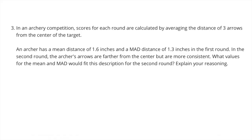Number three: In an archery competition, scores for each round are calculated by averaging the distance of three arrows from the center of the target. An archer has a mean distance of 1.6 inches and a MAD of 1.3 inches in the first round. In the second round, the archer's arrows are farther from the center but more consistent. What values for the mean and MAD would fit this description?